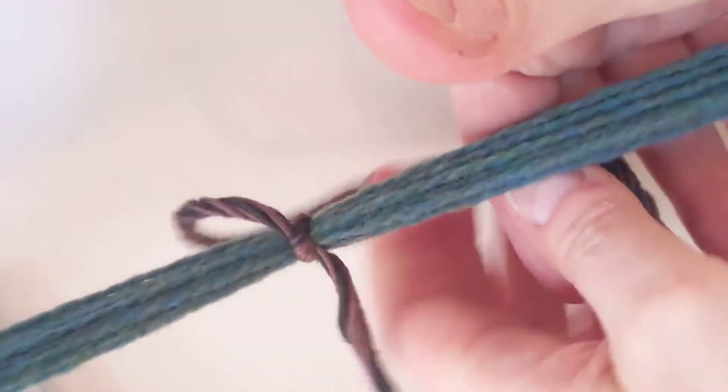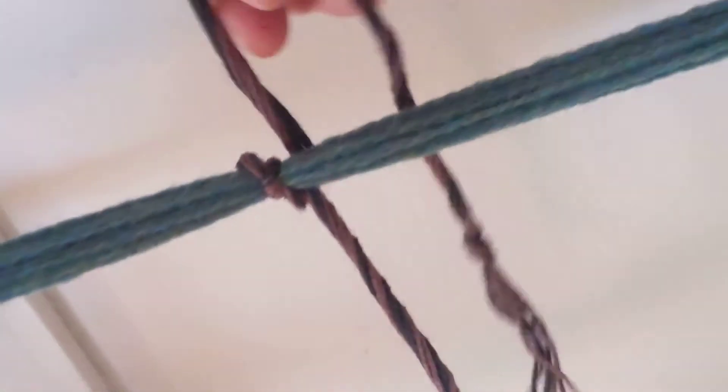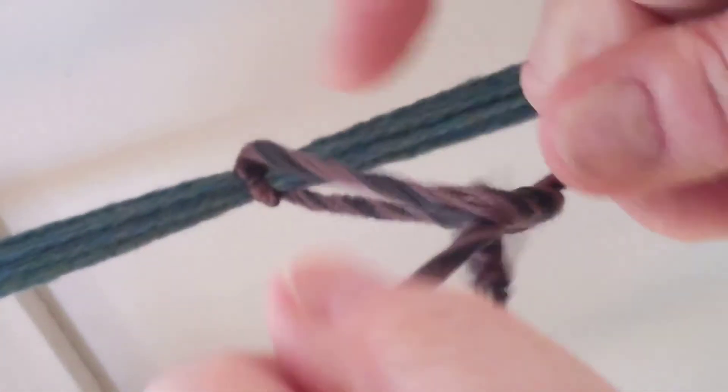So I go around the back here and then I go around the back here. Now I have three layers and then I make another single knot and that's it. That's super tight and it's not going to move.